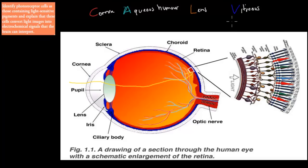The last chapter was all about how light is actually focused onto the retina through these different mechanisms. In this chapter, we're going to talk about the retina itself and how having this light activate the retina gives us our vision — how we can see.